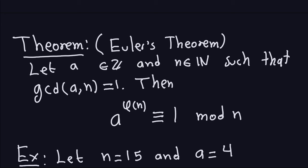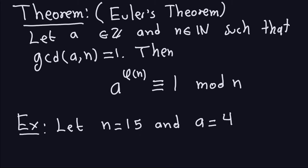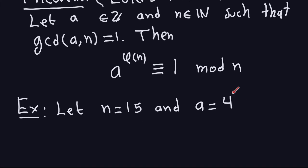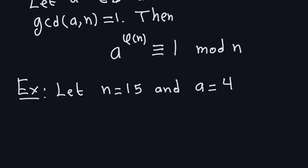Let's look at a particular example just to check that it is actually true for some numbers. This is not a proof — a proof should work for all numbers — this is just an example. I'm going to take n to be 15 and a to be 4. You have to make sure these two numbers do not have any common factors. You can check that the greatest common divisor between 4 and 15 is actually 1.